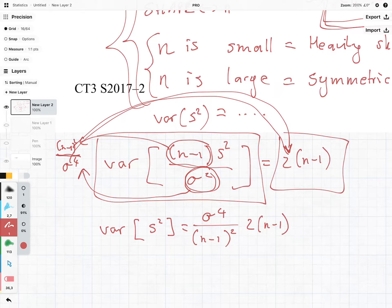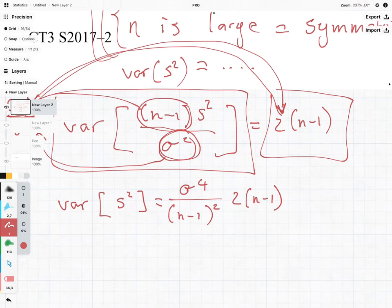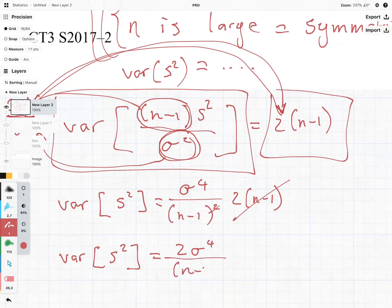Everyone happy with that? And then what we're going to see is we're going to cancel out some of these terms, and we're going to see that the variance of s-squared is equal to 2 sigma to the fourth divided by n minus 1.